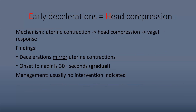For early decelerations, the mechanism is uterine contractions — especially with the fetus in cephalic position — causing head compression, which leads to a vagal response similar to a baroreceptor reflex. These decelerations mirror the uterine contraction exactly. The onset to nadir is 30-plus seconds, so it's gradual — unlike the V-shape of a variable decel. It looks exactly like the contraction but flipped upside down. Early decelerations are often normal and usually require no intervention.